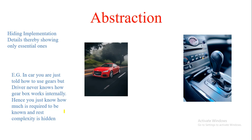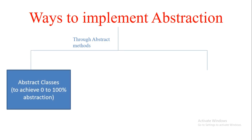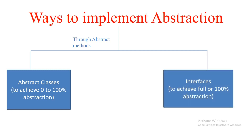Now, how do we implement this abstraction concept in Java? In Java, abstraction is implemented using abstract methods. There are two ways to achieve abstraction: the first is using abstract classes, and the second is using interfaces. Abstract classes can achieve abstraction from 0 to 100 percent, while interfaces are a way to achieve full or 100 percent abstraction in Java.